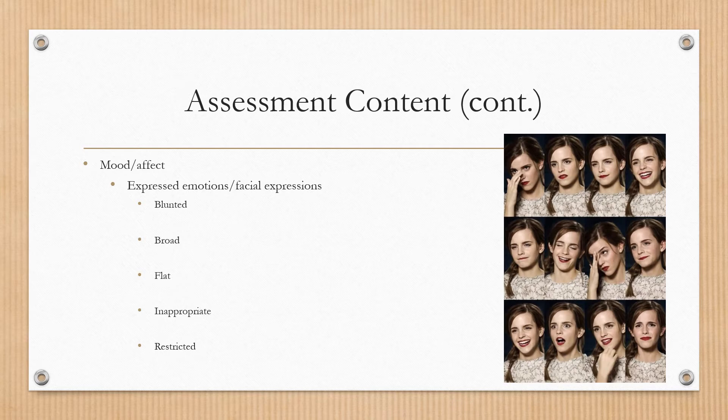Mood can be happy, sad, depressed, angry, euphoric, and so forth. When a patient has rapid mood swings from euphoric to depressed, we say they are labile.